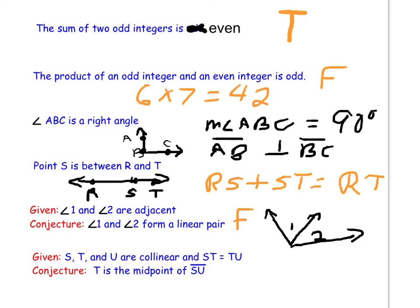Our next conjecture is that given S, T, and U collinear, and the distance ST equals the distance TU, is it true that T has to be the midpoint of SU? Think about that for a minute. Maybe draw a picture if you need to. See what you think. This conjecture is true. So we state that it is true. We don't have to find a counterexample, because there is none. This is a true conjecture.